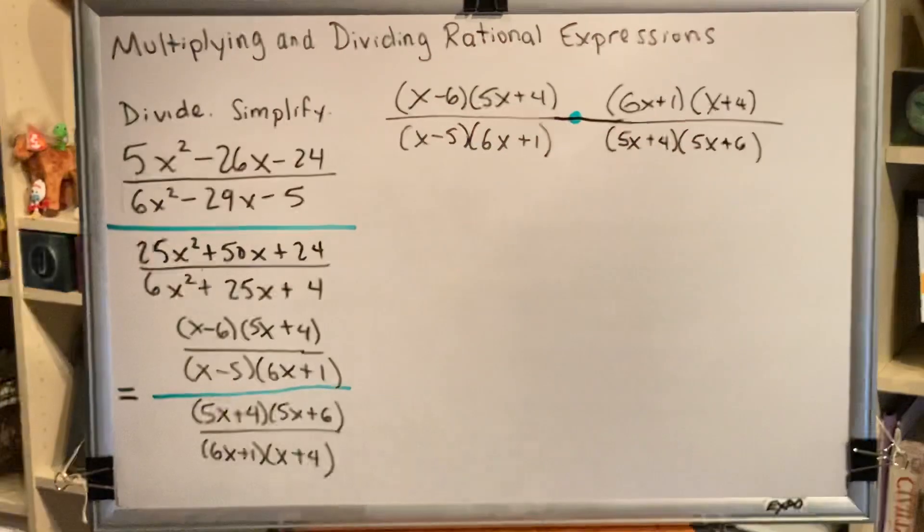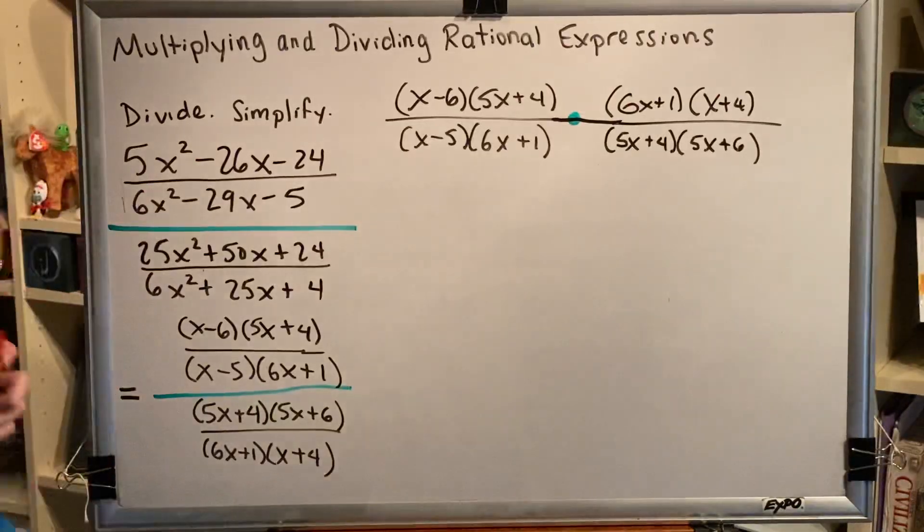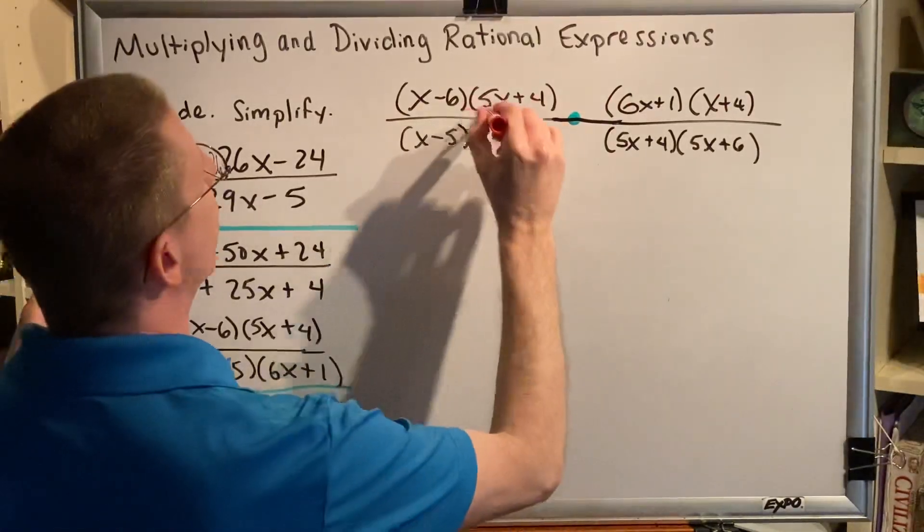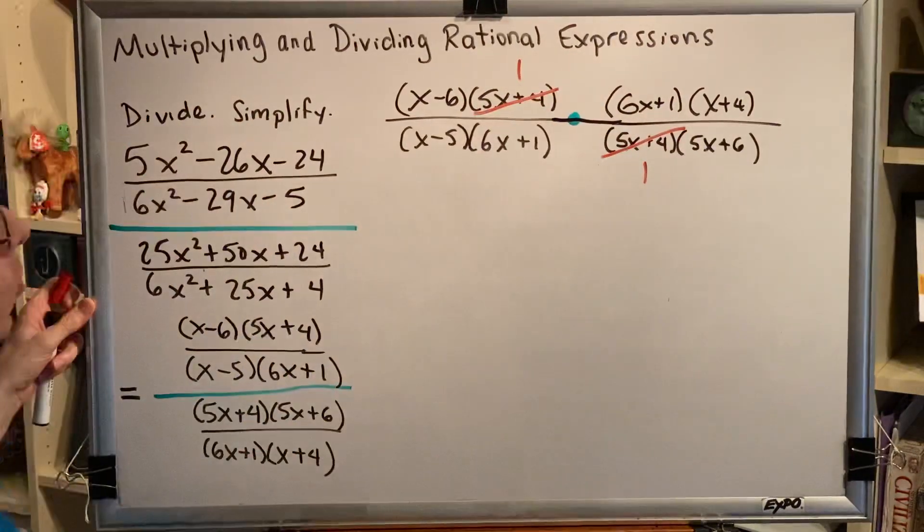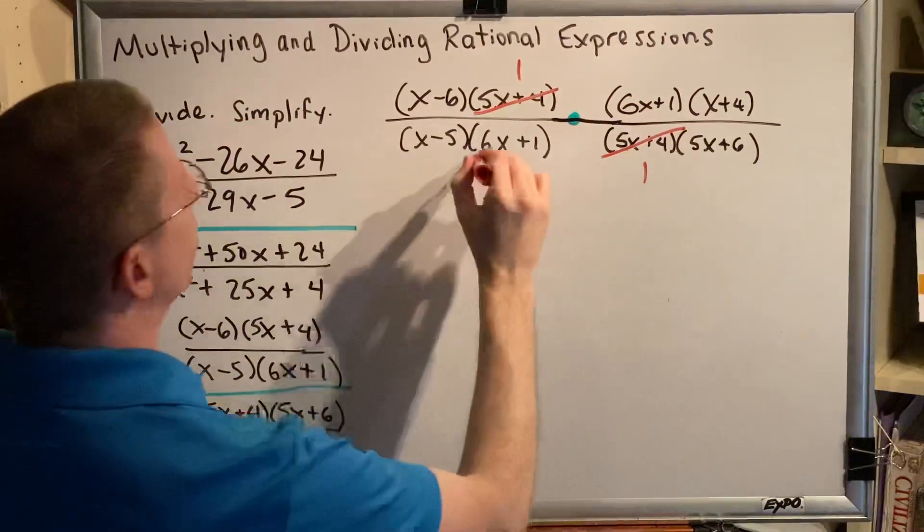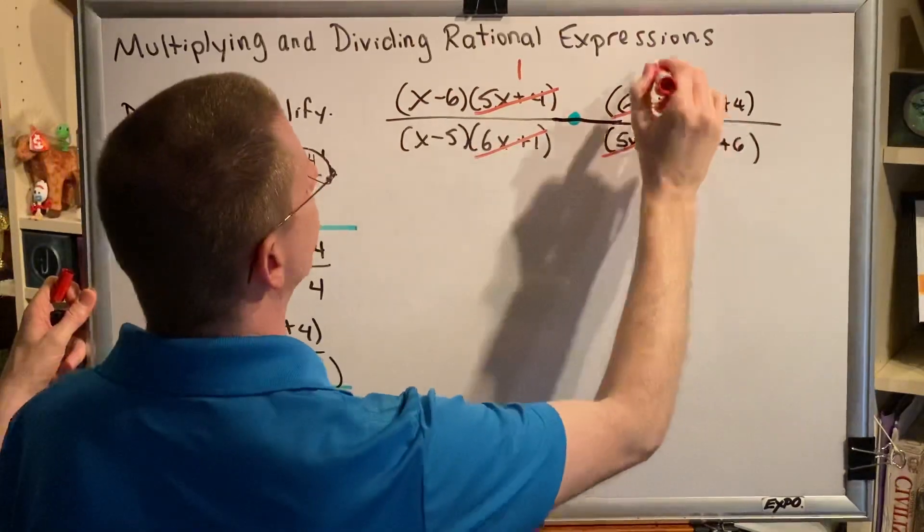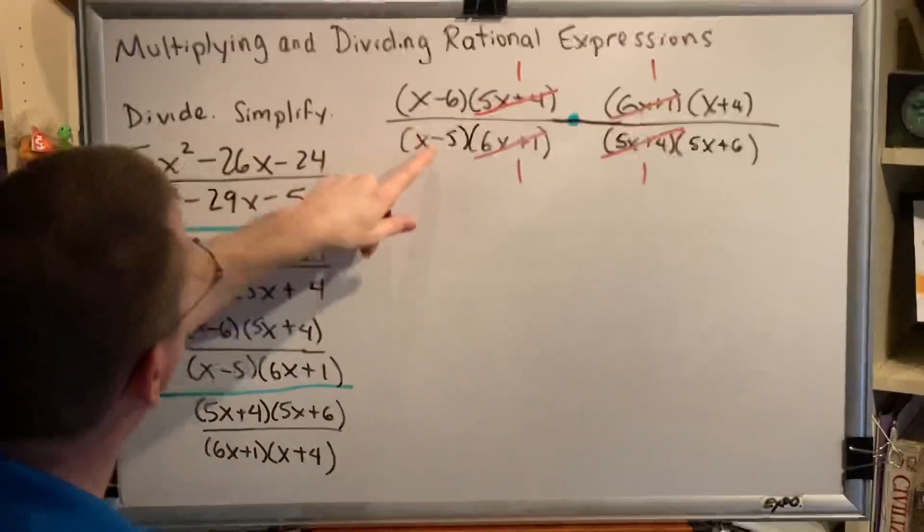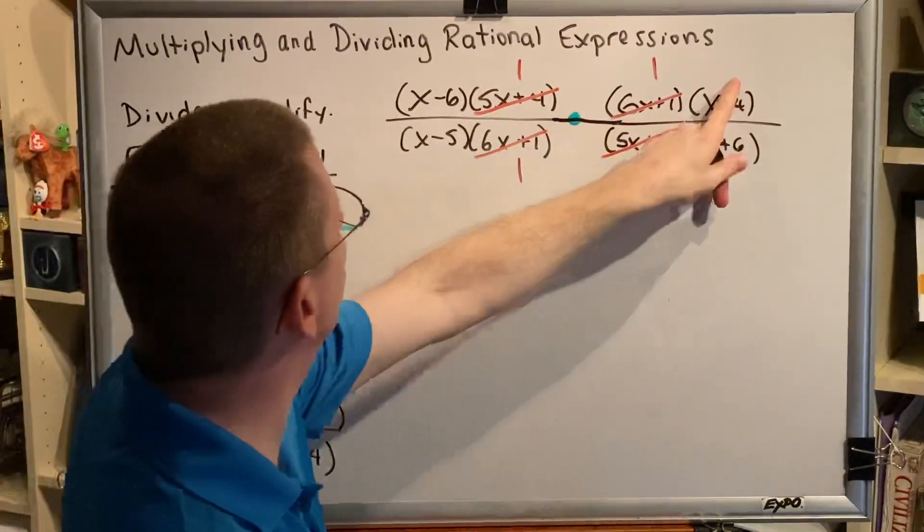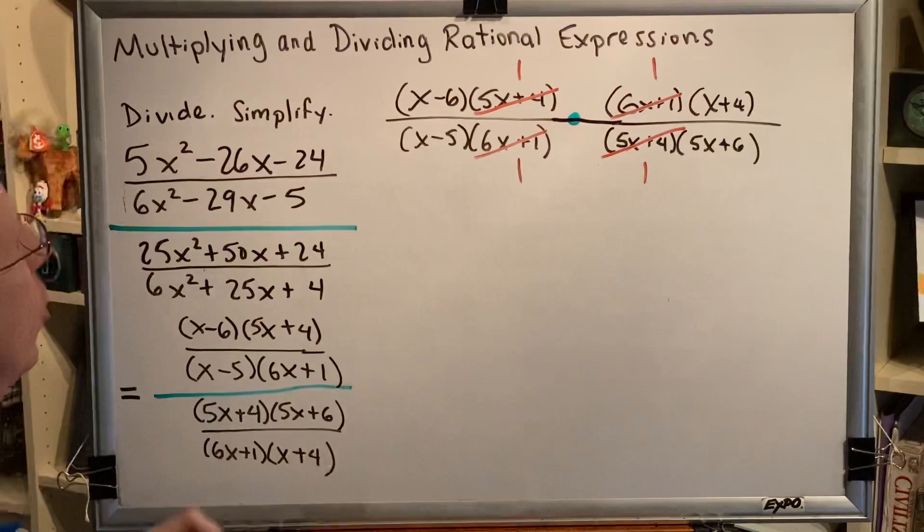Cancel. Any factors that match top and bottom can be reduced to one. So, 5x + 4, 5x + 4, those both turn into ones. 6x + 1, 6x + 1, those turn into ones. And do we have any more? x - 6, no match, no match. x + 4, no match, no match. So, now we can write our final answer.